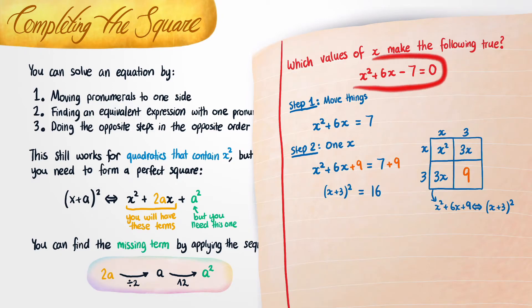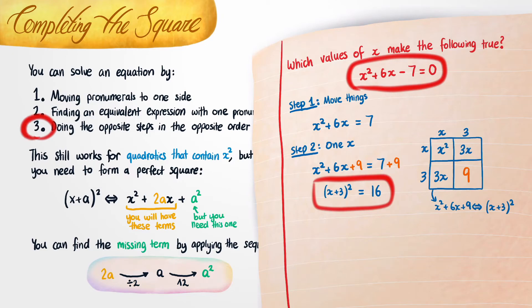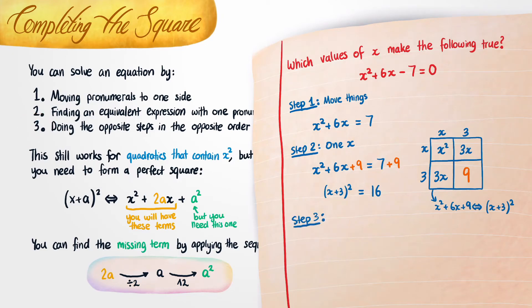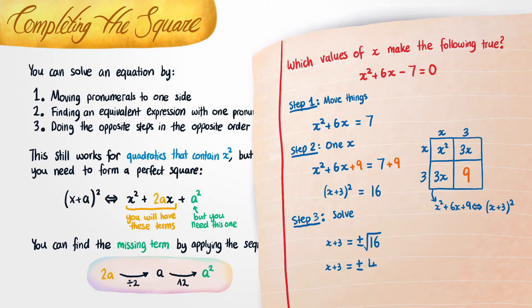At this point, we can see that we've converted this expression into one that only has one x. Therefore it should be really easy to perform step 3, which is to do the opposite steps in the opposite order. The first thing to do is to take the square root of both sides — but don't forget the plus-minus any time you do that. After this, we remember that the square root of 16 is 4. Then to finish things off, we just move this 3 to the other side, where it will become negative.